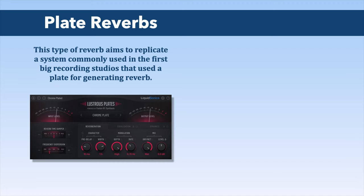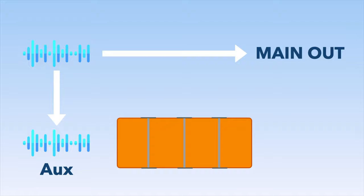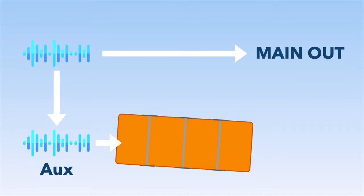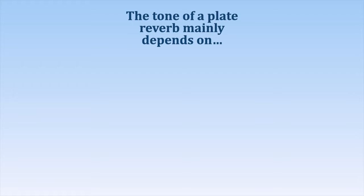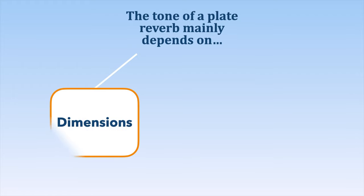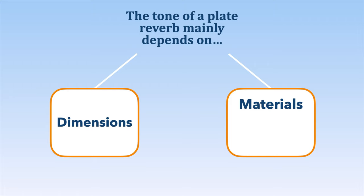The plate reverb aims to replicate a system commonly used in the first big recording studios. The principle consists of sending the dry signal into metal plates to make it vibrate — the vibration then emits a sound with a reverb tail, which is then recovered at the mixing console. Several parameters can vary the tone of a plate reverb, including its dimensions and the material of the plates.